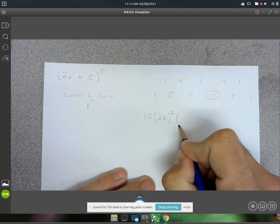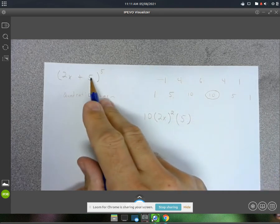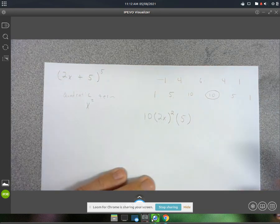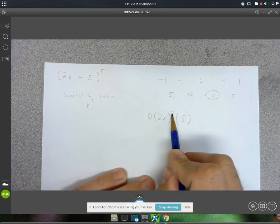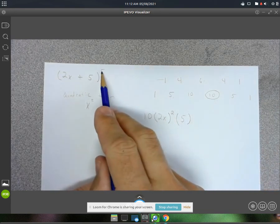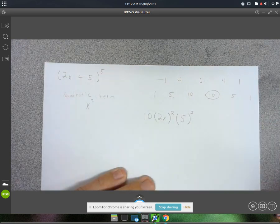And then my next one is going to be that 5 there. Well, the trick is, I know that these exponents have to always add up to this number here, so I know this is going to end up being a 3.